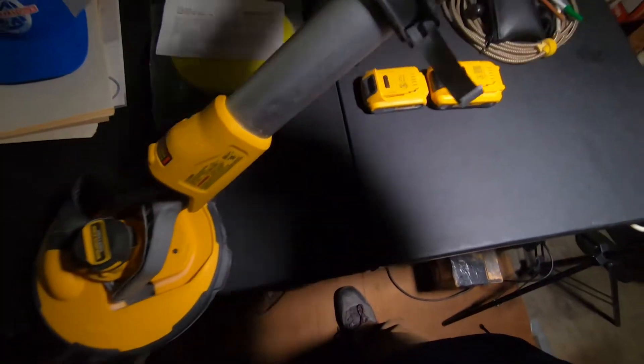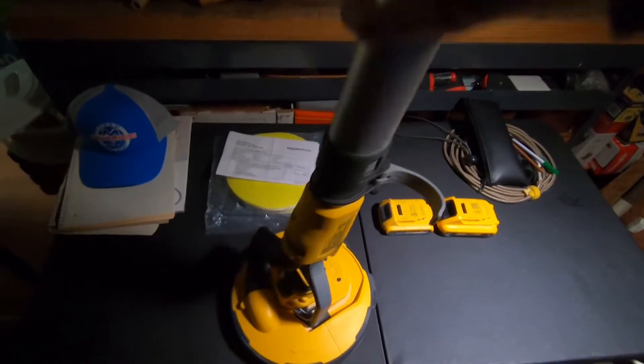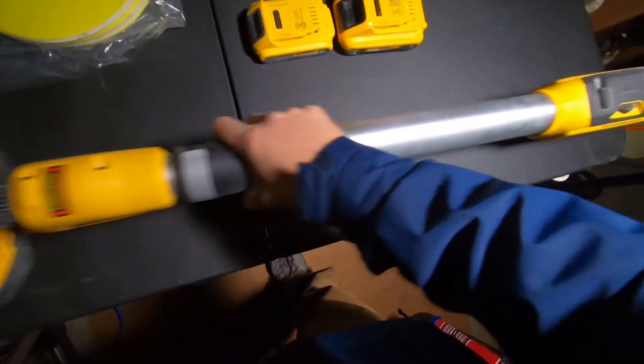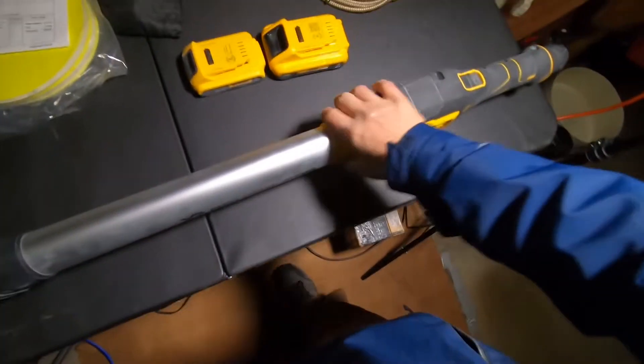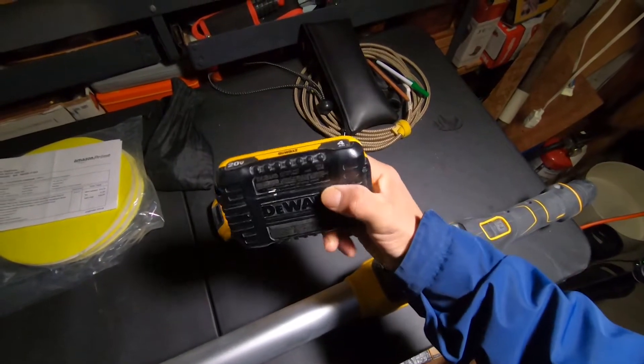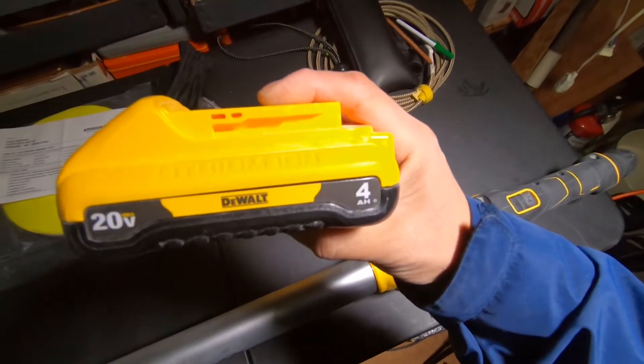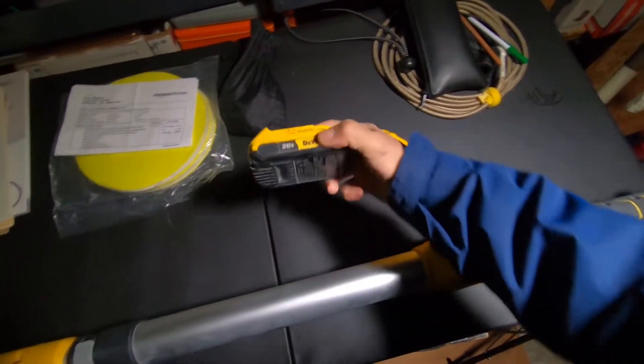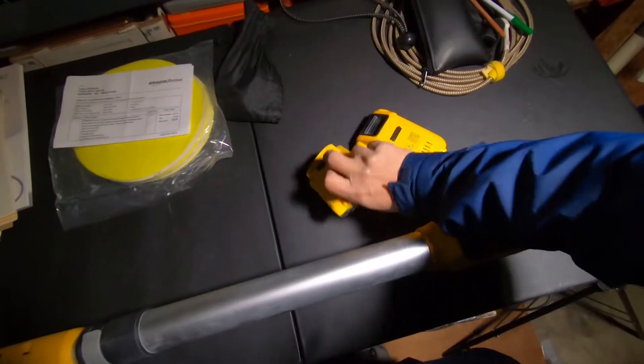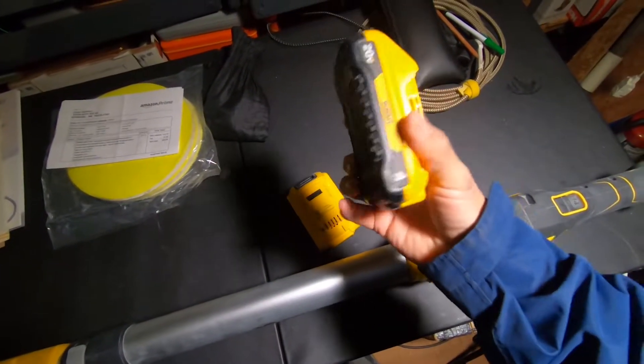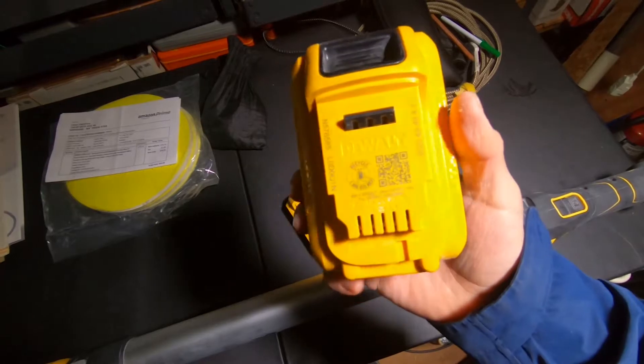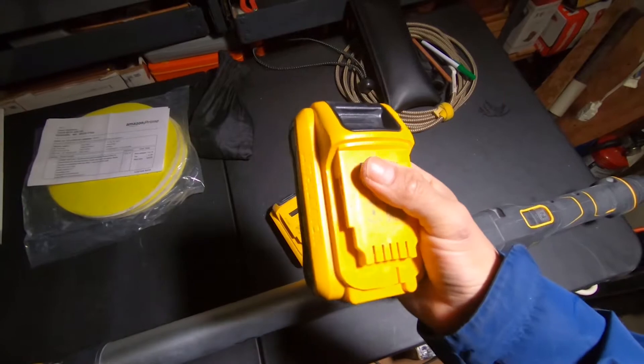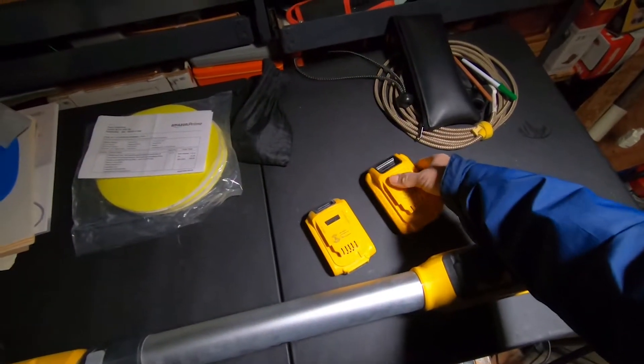And I've been using these batteries. This one is the DeWalt 4AH and this one is 2AH, smaller. And I think with this one I got about 40 minutes to an hour of sanding, maybe less, around 40 minutes I'd say. This one will give you around 30 minutes.